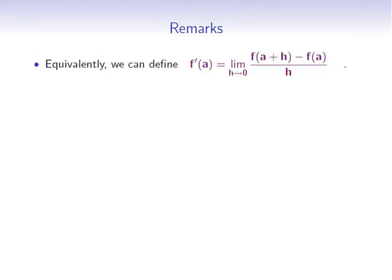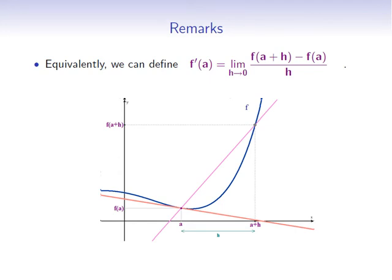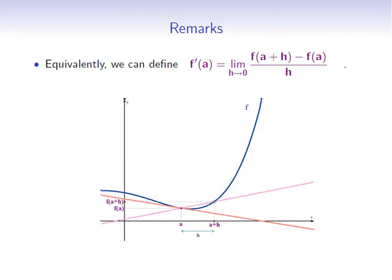Now let's continue with two remarks and the second example. The definition of the derivative can be written equivalently as: f'(a) = lim as h → 0 of [f(a + h) − f(a)] / h. In this case, the x-coordinate of the moving point is a + h, meaning h is the difference between the two x-coordinates of the two points. As h goes to 0, one point moves toward the other and the secant lines again approach a tangent line.